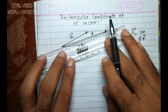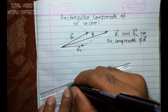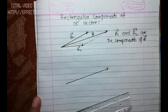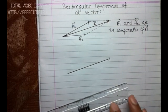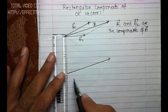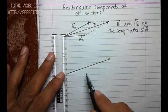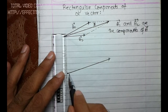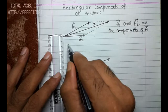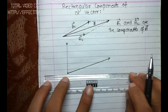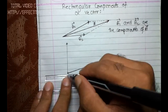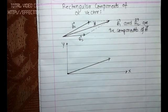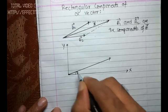Let me draw vector a again, approximately of the same magnitude. Now I can place vector a in the XY coordinate system, making this point the origin. I draw the x-axis and the y-axis. Let us say this angle between vector a and the x-axis is theta.